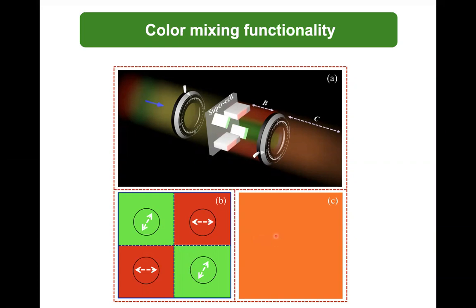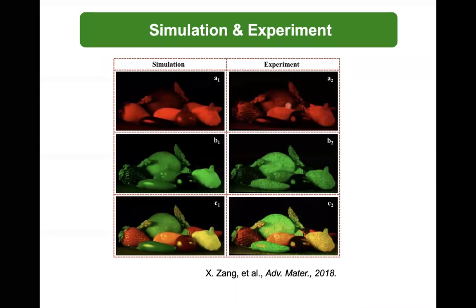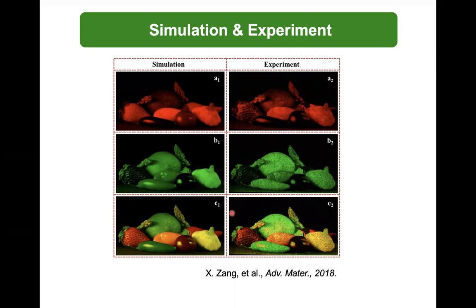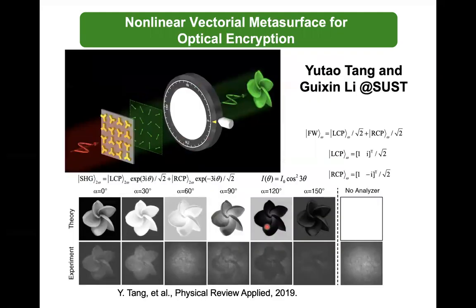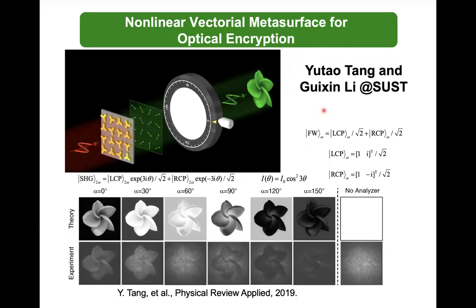For simulation and experiment, if you shine the metasurface with a single color they agree very well, but those are false colors, not a real color image. If you shine the metasurface with two different colors, you can see a real color image. This metasurface design is very robust and can also be used for non-linear vectorial metasurfaces for optical encryption. In collaboration with Professor Guixing Li's group in China, the experimental results and simulations agree very well.